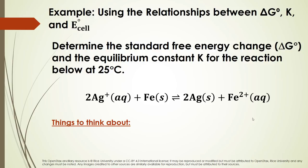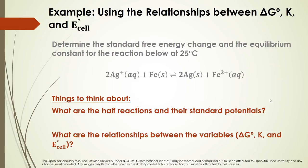Let's do an example using the relationships between delta G, the equilibrium constant, and the cell potential. We need to determine the standard free energy change and the equilibrium constant for the reaction of silver ions and iron metal producing silver metal and iron cations, at 25°C. We'll separate the two half-reactions, find their standard potentials from the chart, and apply our equations.